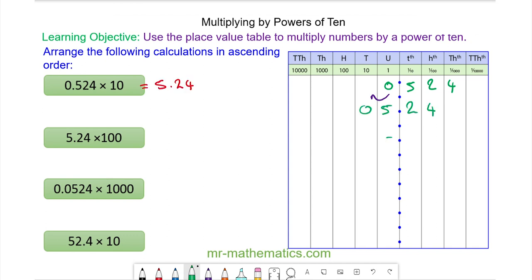Then we have 5.24 multiplied by 100, so we move to the left two places, and we have 524.